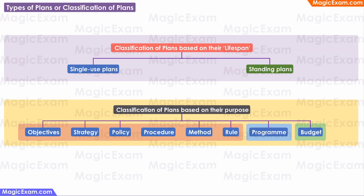The next topic in this chapter is Types of Plans, or the Classification of Plans. Plans can be classified on the basis of their lifespan, either as single-use plans or standing plans.